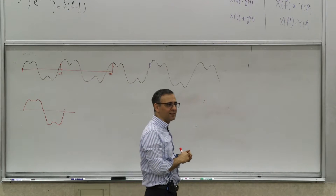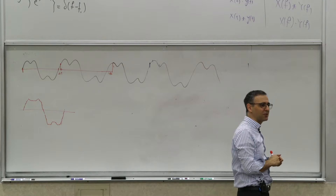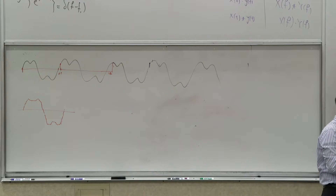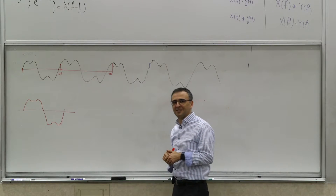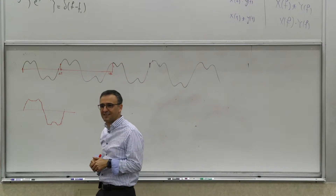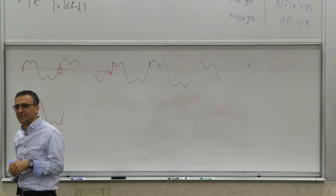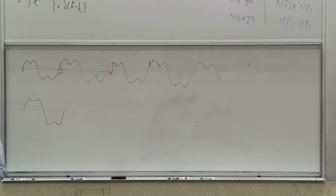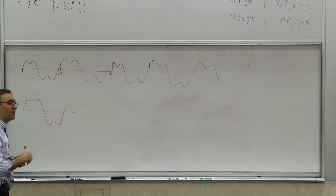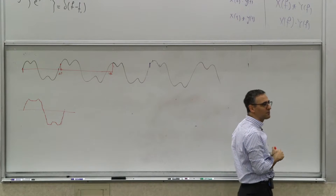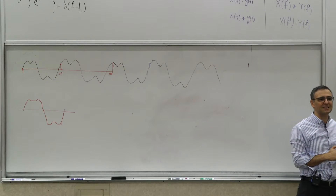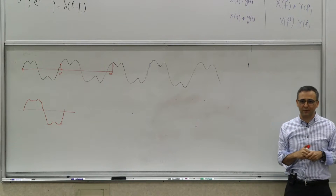But you're sampling at a much lower rate than Nyquist — not even once per period, but once every 100 periods. So what happened? Did you break the Nyquist limit? No — you're exploiting periodicity; you're exploiting the fact that this is a periodic waveform.